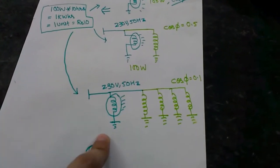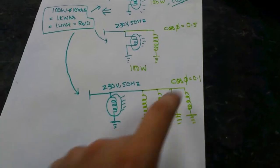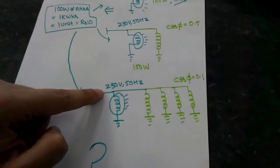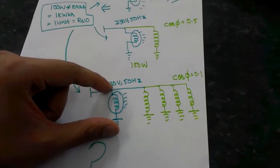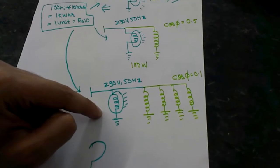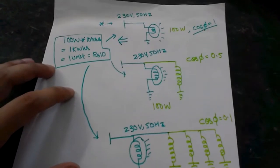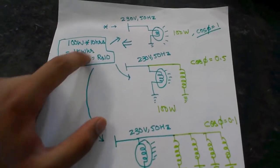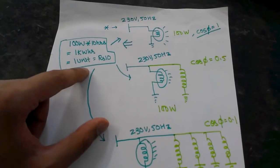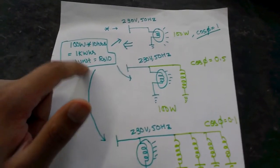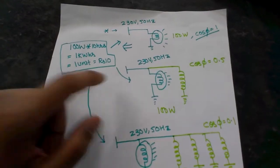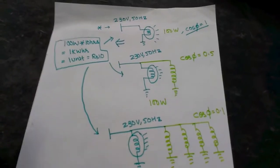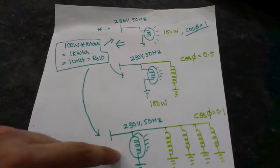Again, if you have connected so many inductive loads in parallel with the tungsten filament bulb and reduced the power factor to 0.1, the voltage is the same and the real power consumed will still be 100 watts. Let's say you switched on the bulb for 10 hours: 100 watts × 10 hours = 1 kilowatt-hour, which is 1 unit. Let's say 1 unit in your country or state is ₹10. So do all these customers have to pay ₹10?